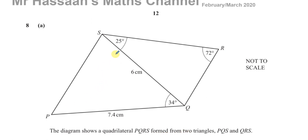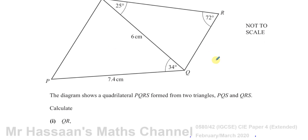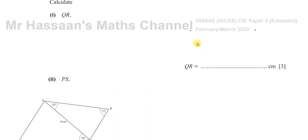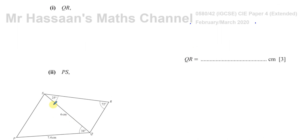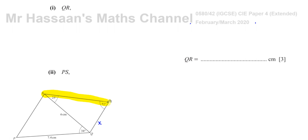You have triangle PQS over here, and triangle QRS over there. Together they form the quadrilateral PQRS. We are asked to calculate first the length QR, which is this length over here. I have a diagram already prepared which I'm going to use to refer to. I'm going to call this length X. So to find QR, I'm going to be using triangle QRS.